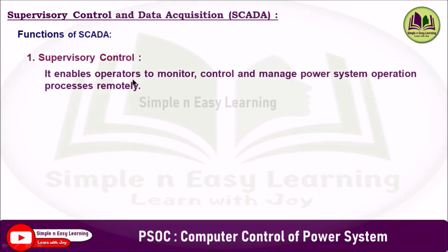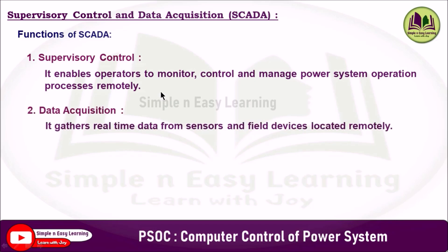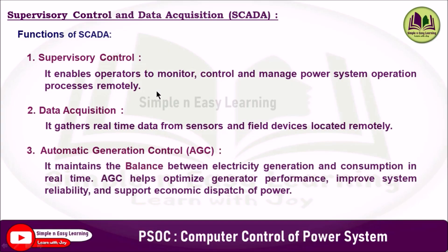The first function is supervisory control, which enables operators to monitor, control and manage power system operation processes remotely. The second is data acquisition, which gathers real-time data from sensors and field devices located remotely. The third is automatic generation control (AGC), which is responsible for maintaining the balance between electricity generation and consumption in real-time. It automatically adjusts the output of multiple generators to ensure stable system frequency and proper power flow, optimizing generator performance and supporting economic dispatch.